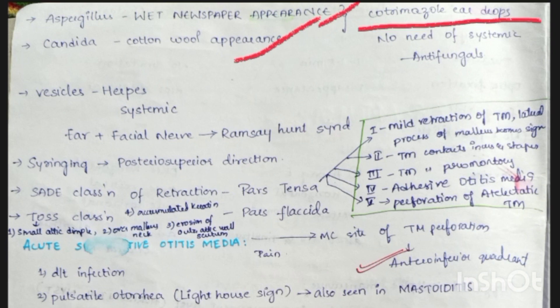For fungal otitis externa we use clotrimazole ear drops — no need for systemic antifungals. Vesicles are seen in herpes ear involvement, and facial nerve involvement is seen in Ramsay Hunt syndrome.